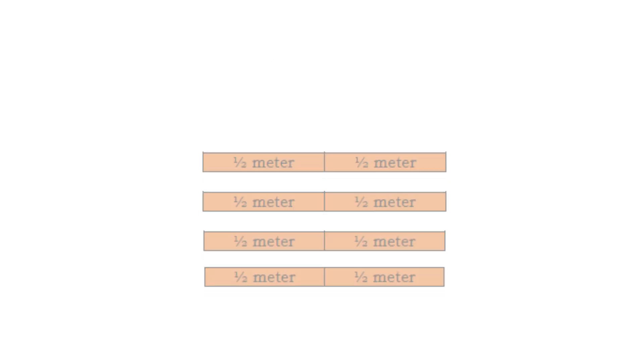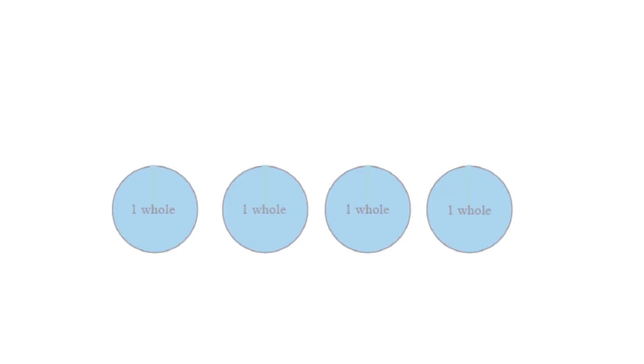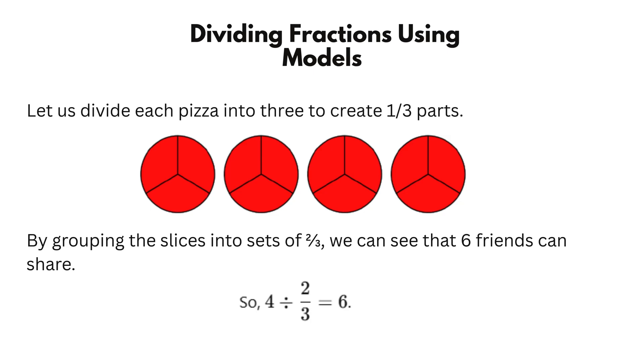Now, let's try another. Lisa bought 4 pizzas. Each friend gets 2 thirds of a pizza. How many friends can share? Let us divide each pizza into 3 to create 1 third parts. By grouping the slices into sets of 2 thirds, we can see that 6 friends can share.